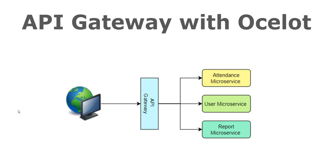Now before we go to Ocelot, let's discuss what is API Gateway. In today's world we usually create multiple microservices or single responsibility services for a particular product, and for each of these services we will have different endpoints. Accessing these services from an external world, it doesn't make sense exposing multiple URLs. We should have a single entry point to all our services and based on different paths we should be doing the routing.